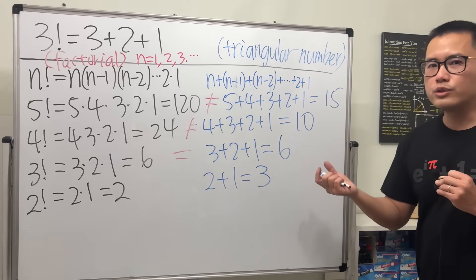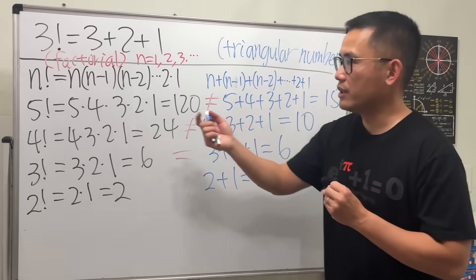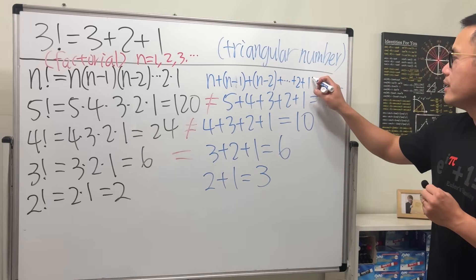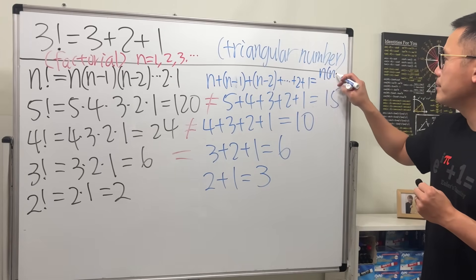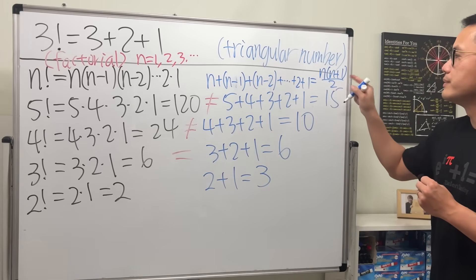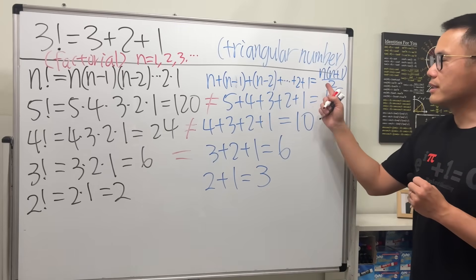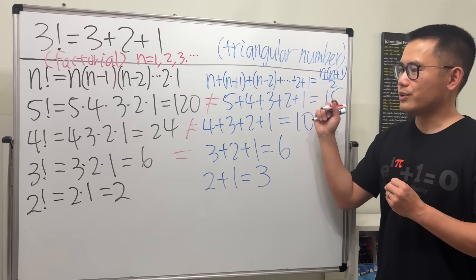much better formula. This will give you n times n plus 1 over 2. That's the formula for the triangular number. You can check out my other video on why this formula is true. It's pretty cool. Now in this video, let's also talk about what if you keep going. What's...